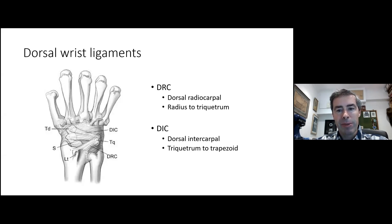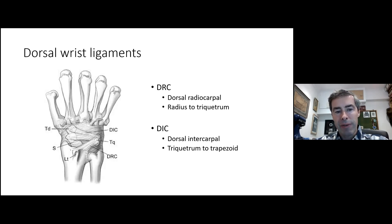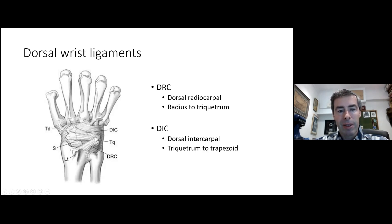There are two sorts of capsulotomy: ligament-sparing and ligament-sacrificing. If you want to do a wrist fusion you can just split the ligaments longitudinally. But if you want to preserve motion — for a four-corner fusion, scaphoid repair, scaphoid ligament repair, or proximal row carpectomy — you split the ligaments parallel with their fibres, raising a triangular flap in line with the DRC and DIC ligaments.